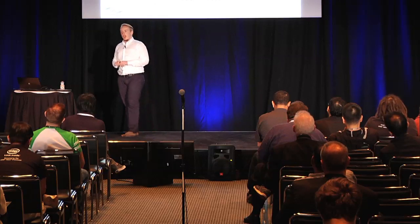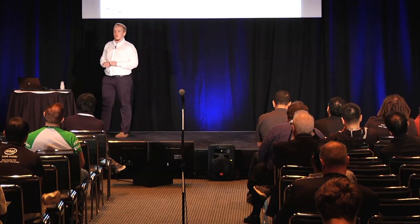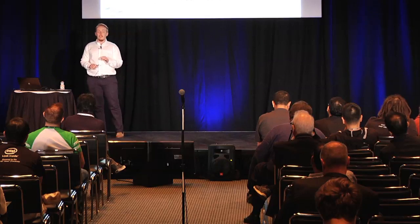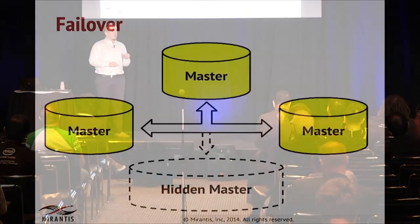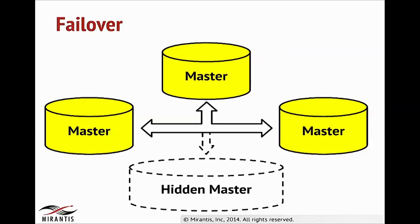How do we accomplish automated failover? When a user wants to spin up a new replication set, they define a multi-master replication and specify that they want automated failover with a failover flag. They will receive an actual replication set with one hidden instance that is not visible to them.